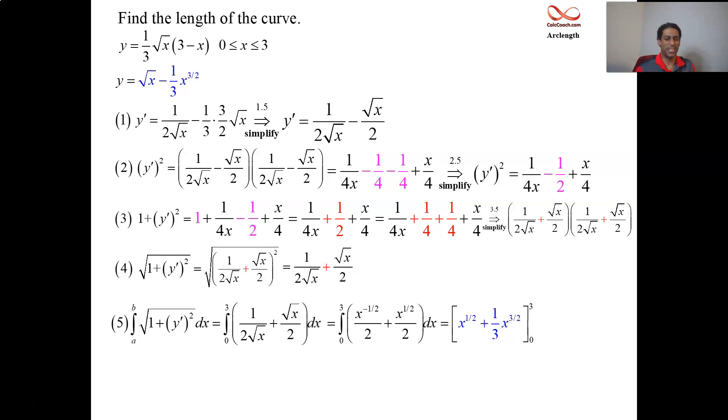A couple more steps and we're done. Put the 3 in. And when you put the 0 in, you're going to get 0. So put the 3 in, 3 to the 1⁄2, and then 1⁄3 of 3 to the 3⁄2. But that second term there is just another 3 to the 1⁄2 power. Two of them. The answer, 2 root 3.